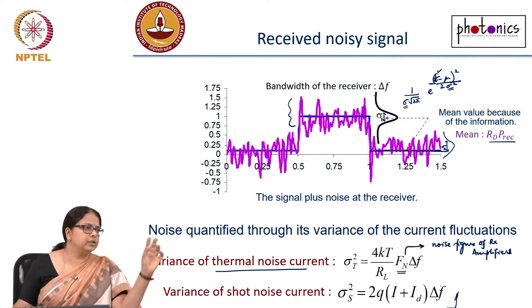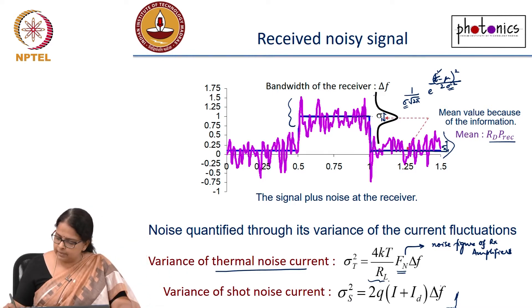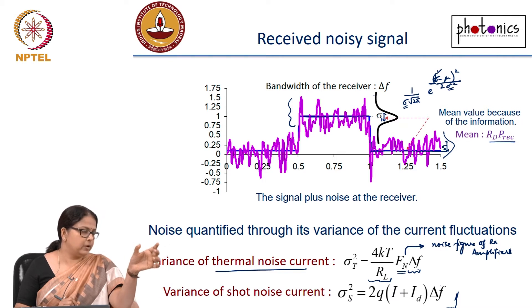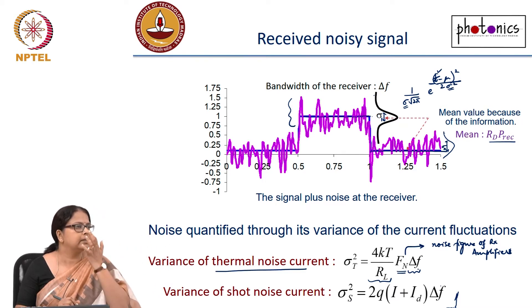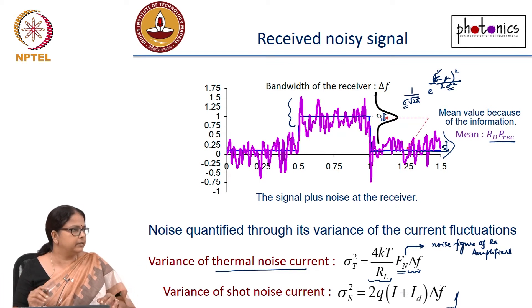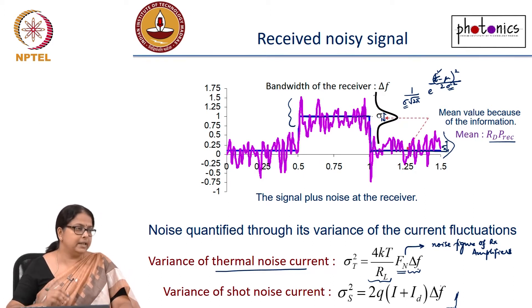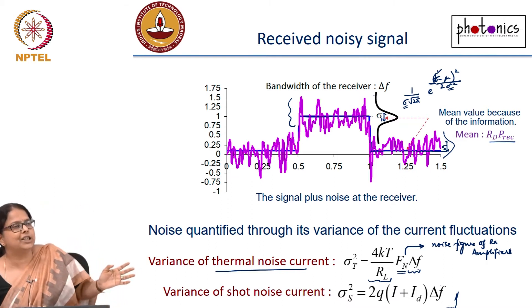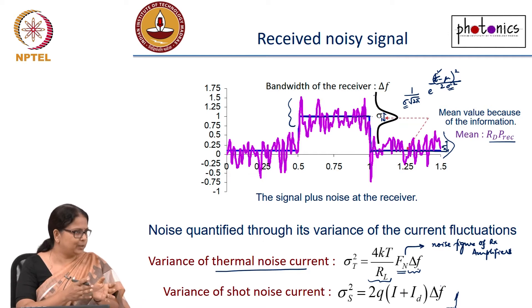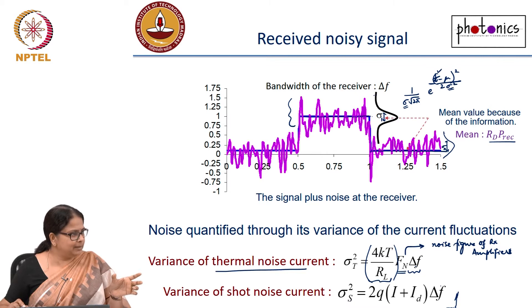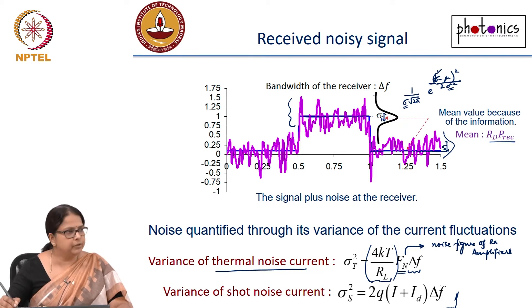If you do not have a chain of amplifiers, just put Fn equal to 1. This is your power spectral density multiplied by Δf — Δf is the bandwidth of the receiver, decided by the filter in the receiver. You will adjust your receiver bandwidth according to the bit rate. You should not use a large bandwidth receiver when your data rate is very small, because that multiplies your noise power spectral density by a large bandwidth and adds a lot of noise in the system.